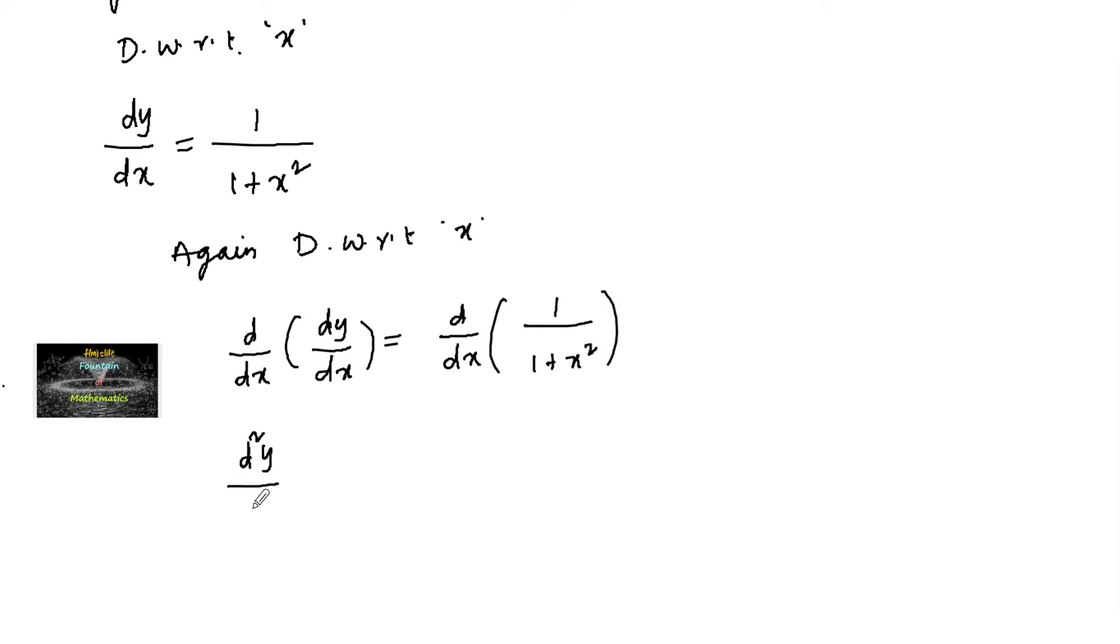So we have d square y by dx square is equal to. Let us use u by v rule. We have u by v rule is nothing but v into u dash minus u into v dash, upon v square.